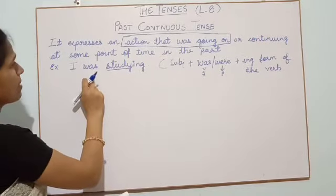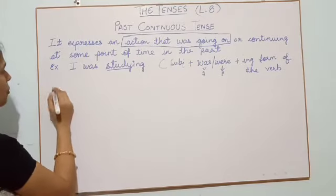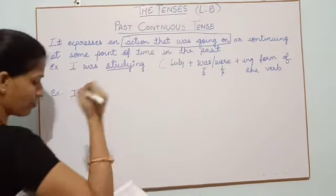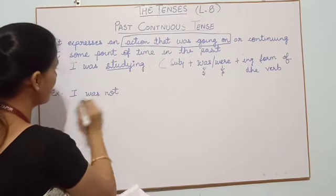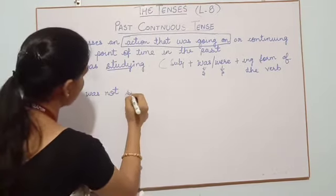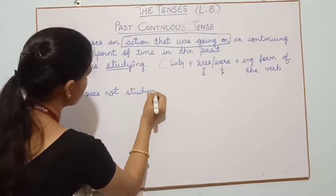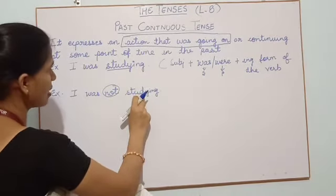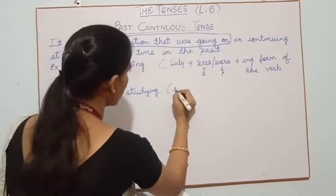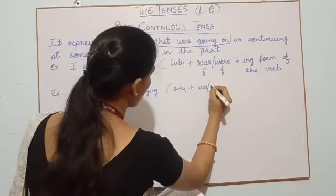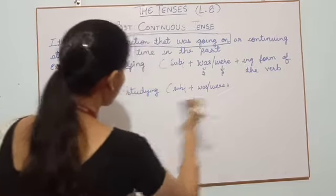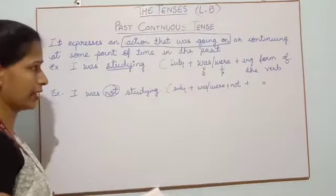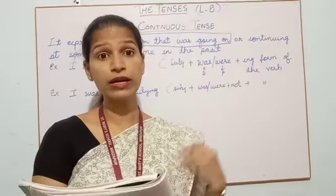When I want to make the same sentence negative, I add 'not' after was or were. For example, 'I was not studying.' The formula for the negative is: Subject + was/were + not + verb(-ing). We only add 'not' to make it a negative sentence.